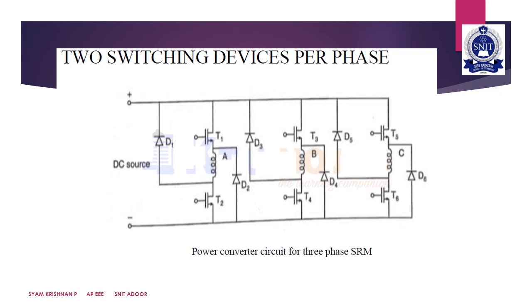The first one is two switching devices per phase. Please look into this circuit diagram for a three-phase switched reluctance motor. We use six semiconductor switching devices and six diodes. A circuit using six IGBTs as switching devices is shown in this figure.